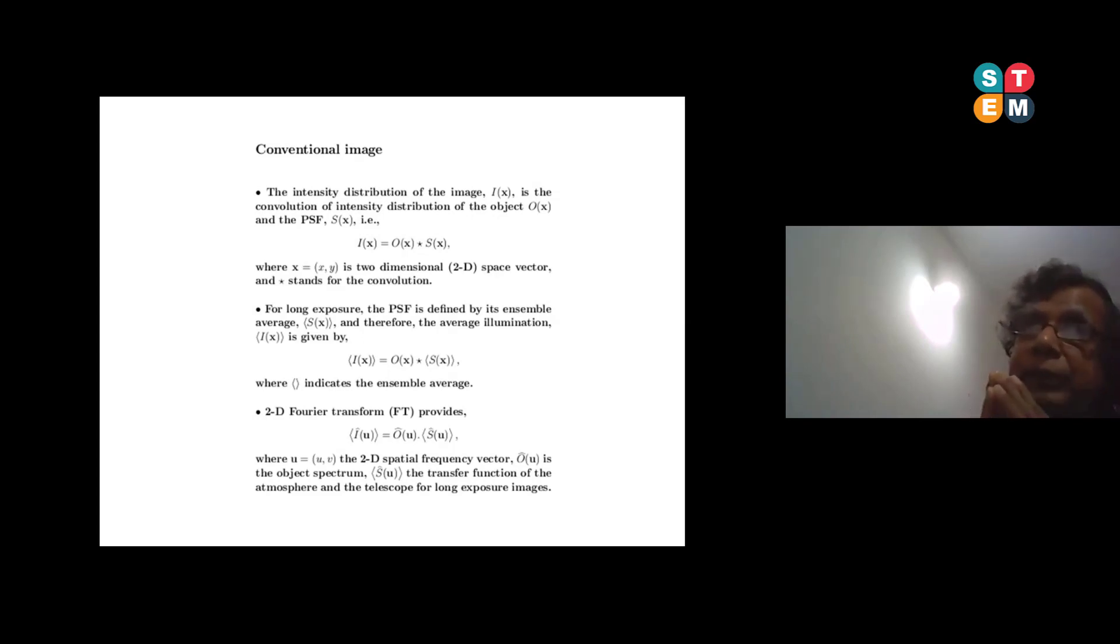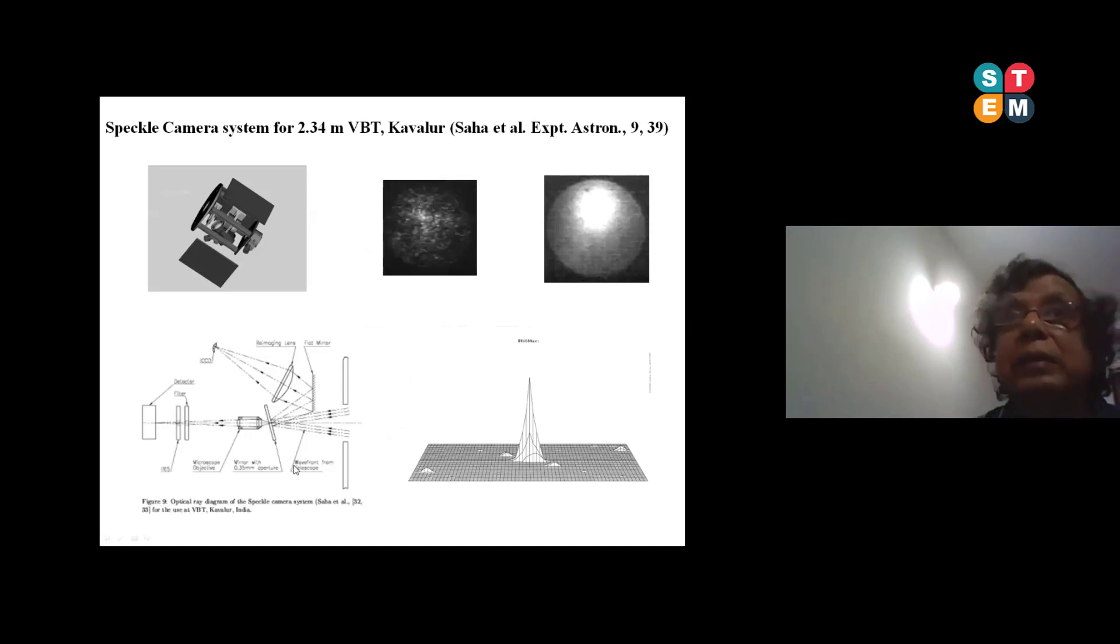The conventional image - those who are giving overexposure - anything more than 10 milliseconds is called overexposed. Normally the conventional astronomers try to give exposure of say 10 seconds, 20 seconds. What is happening: i is the image at the focal point, o is the object, and s is the point spread function of the telescope, atmosphere and everything together. These two are getting convolved. If you average them at the image level then it becomes overexposed.